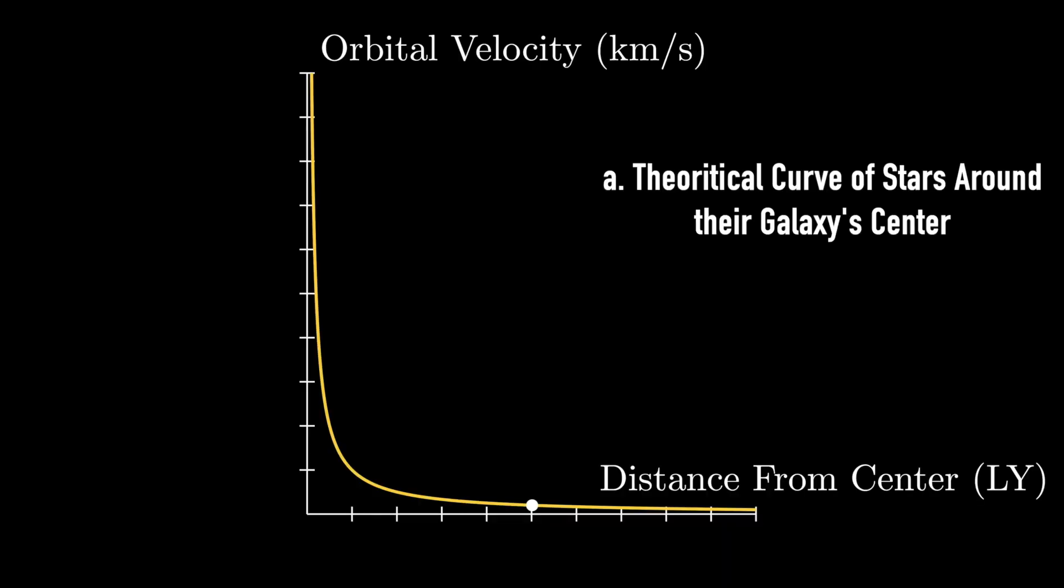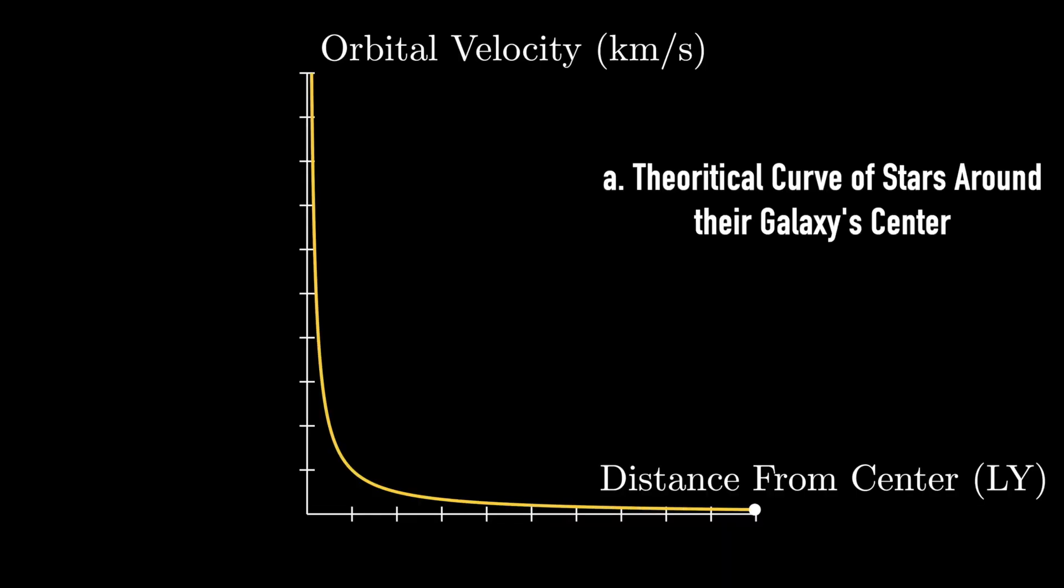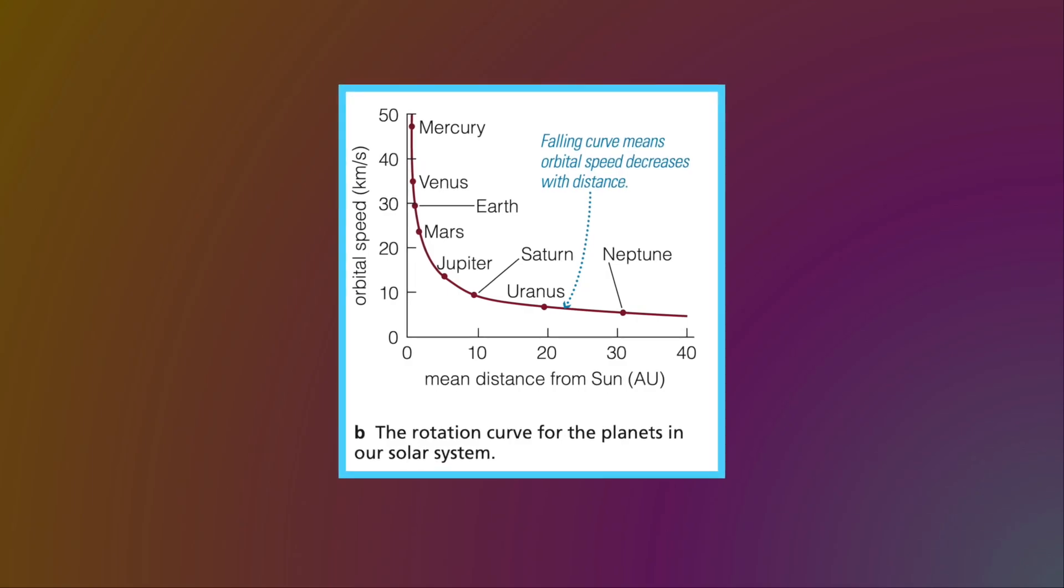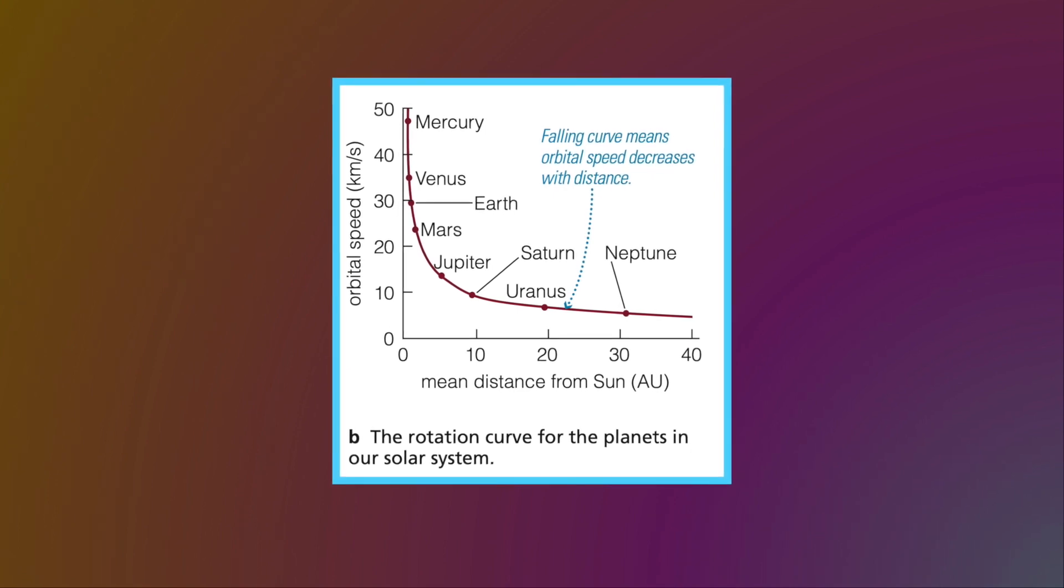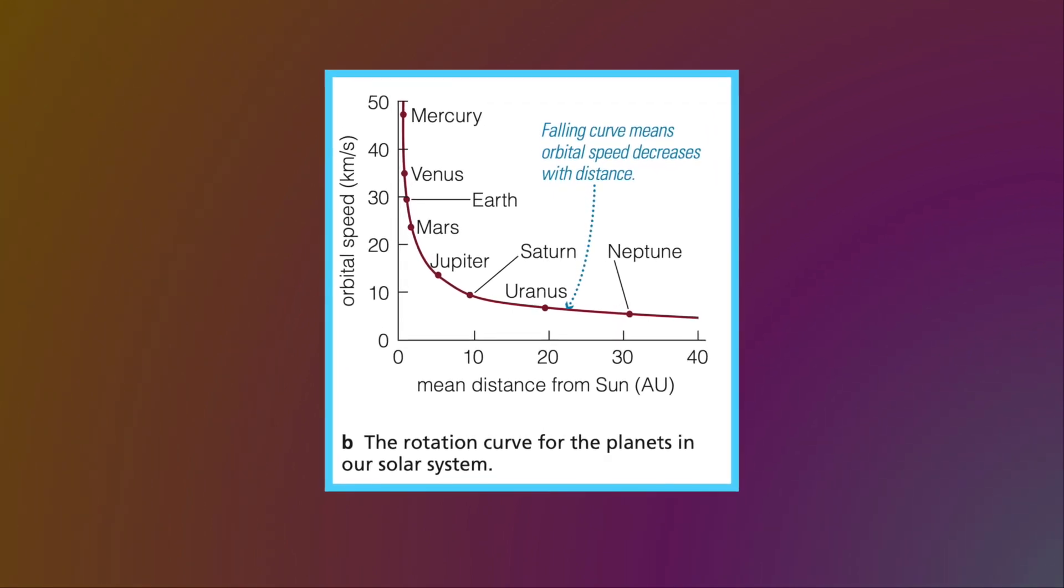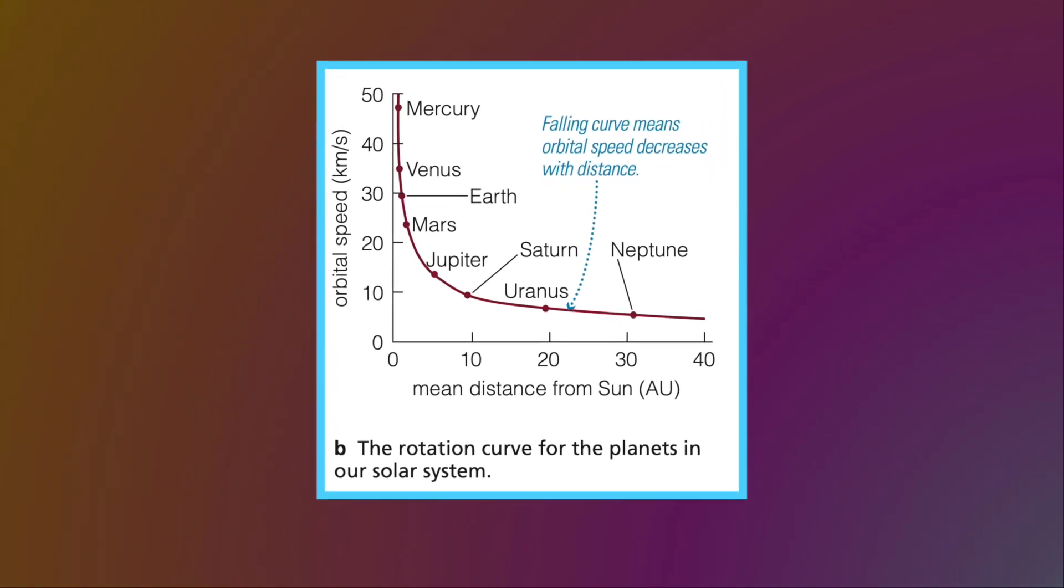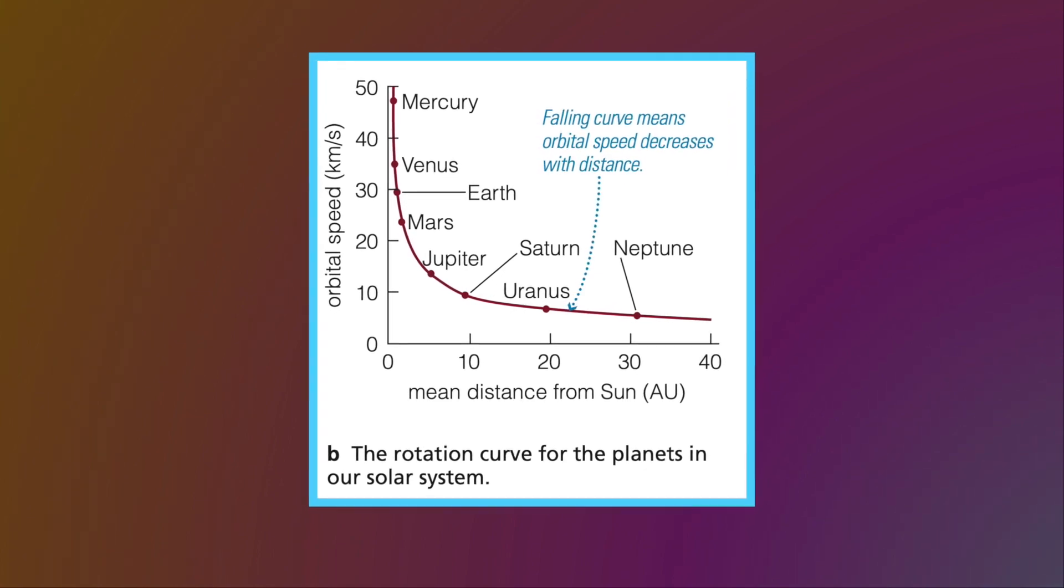In a galaxy, Newton's laws of gravity and motion imply that stars closer to the galaxy's center should have a greater rotational velocity than those further away. On a smaller scale, in our solar system, planets closer to the sun, the center of mass, such as Mercury, orbit much faster than those further away, such as Uranus.